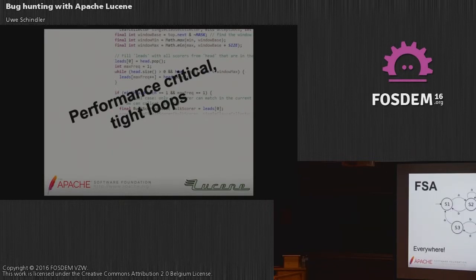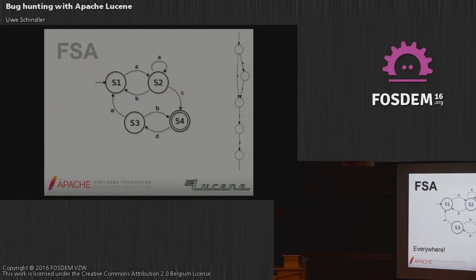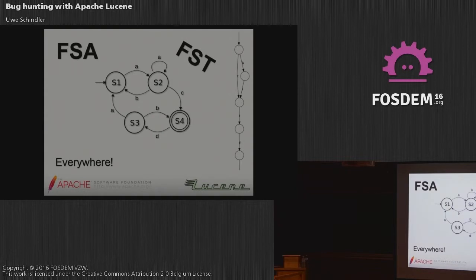The second thing is that Lucene's term index is based on structures like finite state automatons and finite state transducers — the same structures used internally by regular expressions. When looking up a term, you go through a state machine. Those FSTs are very, very huge, handling a lot of data. Together with all those loops, there's a lot for HotSpot to optimize, and it does it really, really well.